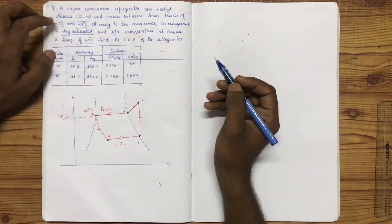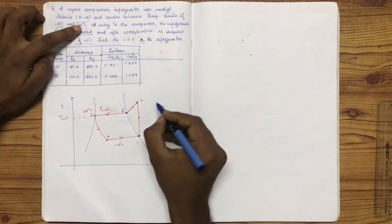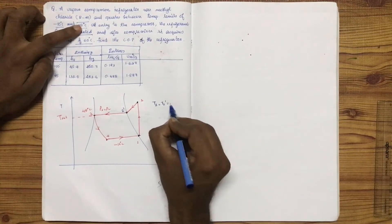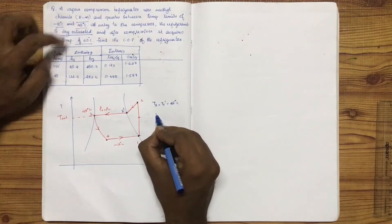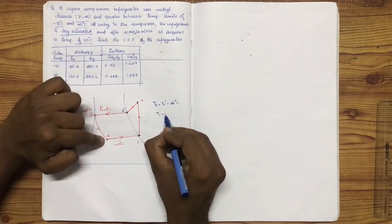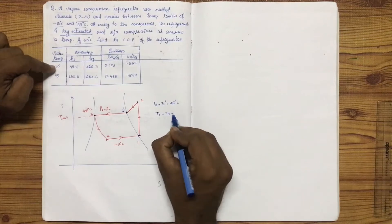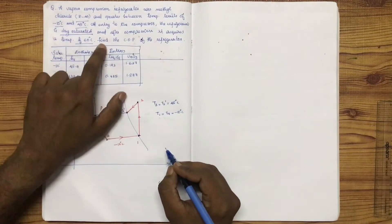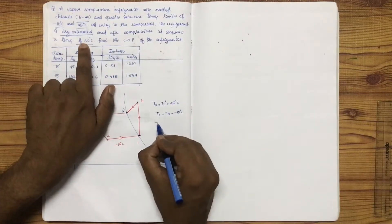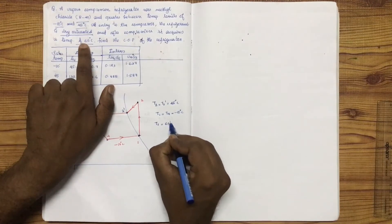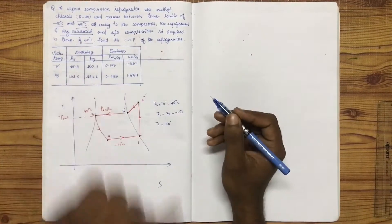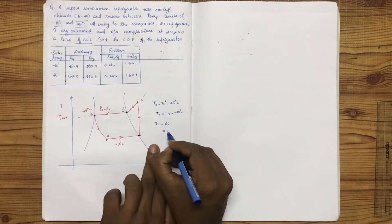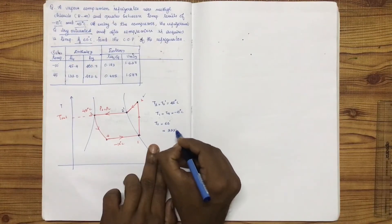The temperature limits are minus 10 and 45 degrees Celsius. T3 equals 45 degrees Celsius, and T1 equals T4 equals minus 10 degrees Celsius. When T2 is 60 degrees Celsius, T2 in Kelvin is 333 K, and T3 is also expressed in Kelvin as 333 K.